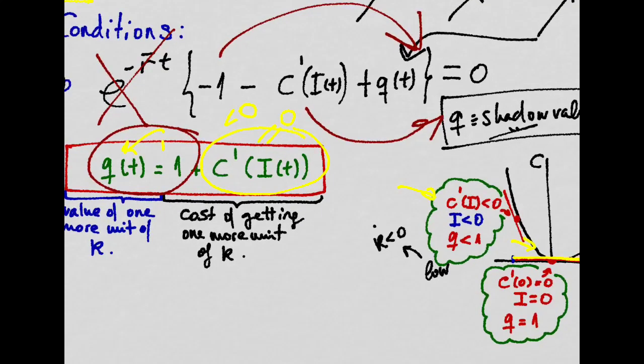As we will see, this will be the case in which the economy will be at steady state. Thus, Q equal to one is an important benchmark to know if the capital stock is increasing or decreasing.